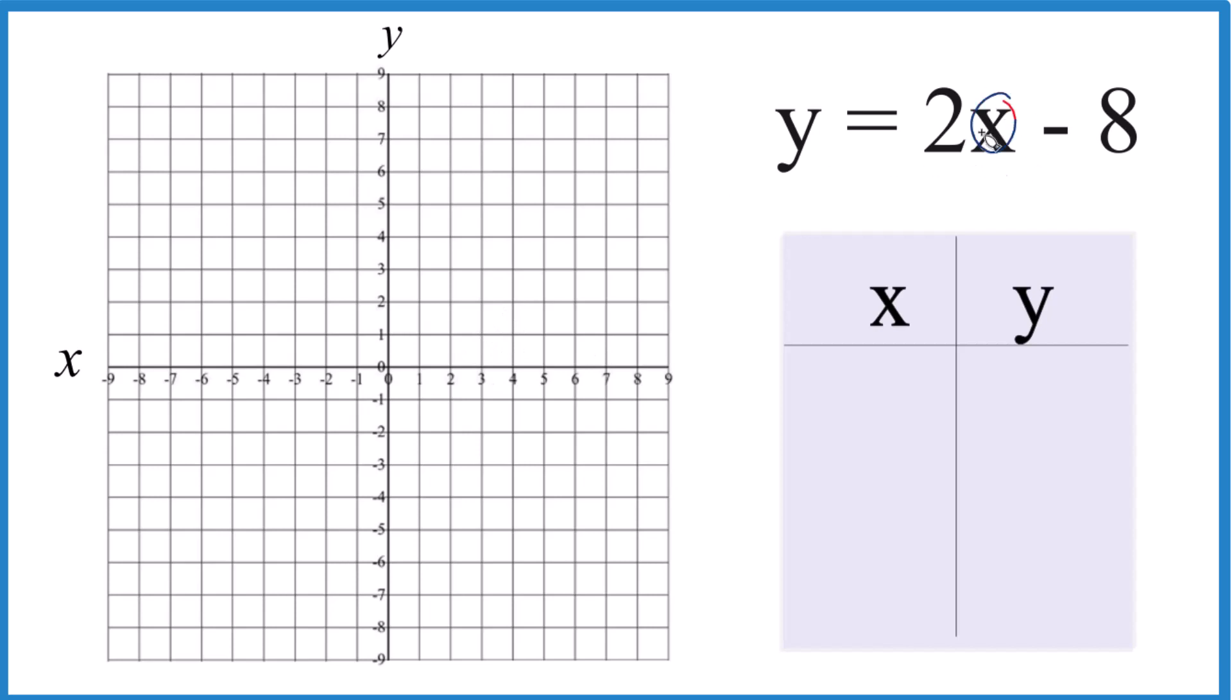So why don't we start out with 0. 2 times 0 is 0, and 0 minus 8 gives us negative 8. How about 1? 2 times 1 is 2. 2 minus 8, negative 6. And I'm going to choose 4, because 2 times 4 is 8, and then 8 minus 8 is 0.